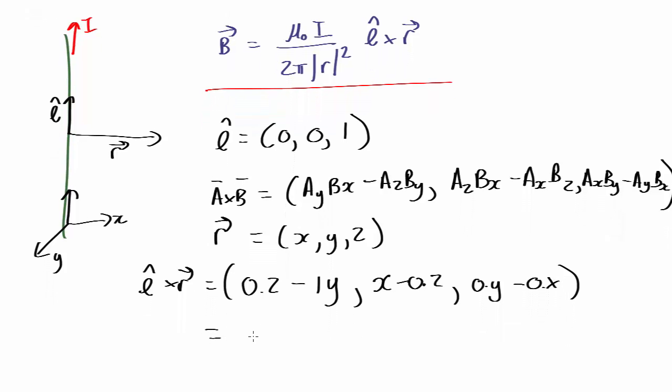So you find this comes out as (-y, x, 0).